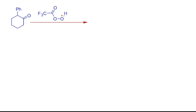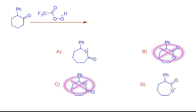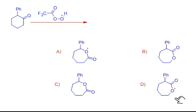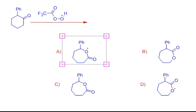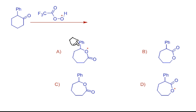When this ketone is treated with a peroxy acid, Baeyer-Villiger oxidation takes place. The peroxy acid here is isotopically labelled, therefore the ester oxygen in the product must be this isotopically labelled oxygen. Options B and C don't have this labelled oxygen, so these two are cancelled. Option D shows migration of methylene carbon and is therefore cancelled. Option A is correct, as it shows migration of PhCH in preference to the methylene carbon.